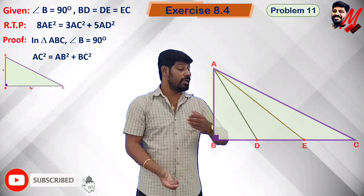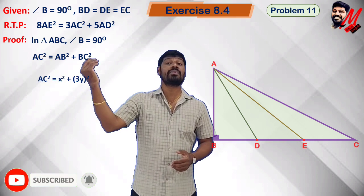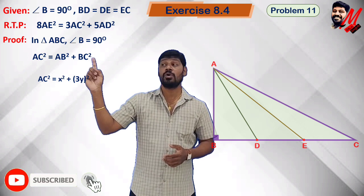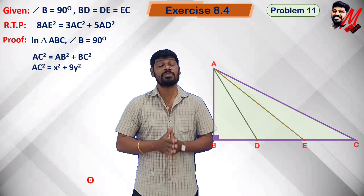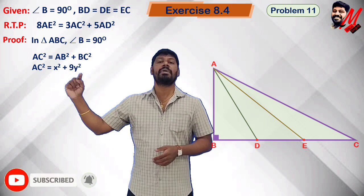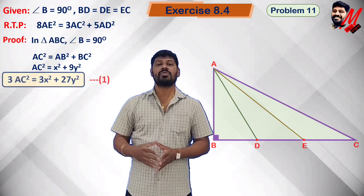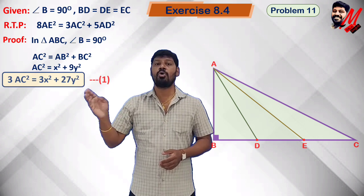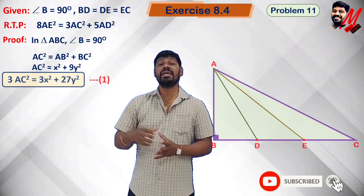With AB equal to X and BC equal to 3Y, AC square is equal to AB square plus BC square, which gives X square plus 3Y whole square, which equals X square plus 9Y square. Multiplying both sides by 3: 3 times AC square equals 3X square plus 27Y square.